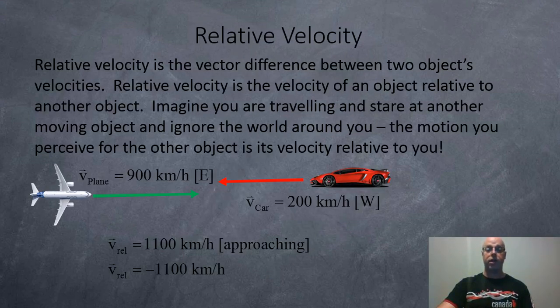Relative velocity is the vector difference between two objects' velocities. Relative velocity is the velocity of an object relative to another object. Imagine you're traveling and you stare at another moving object and ignore the world around you. The motion you perceive for the other object is the velocity relative to you.